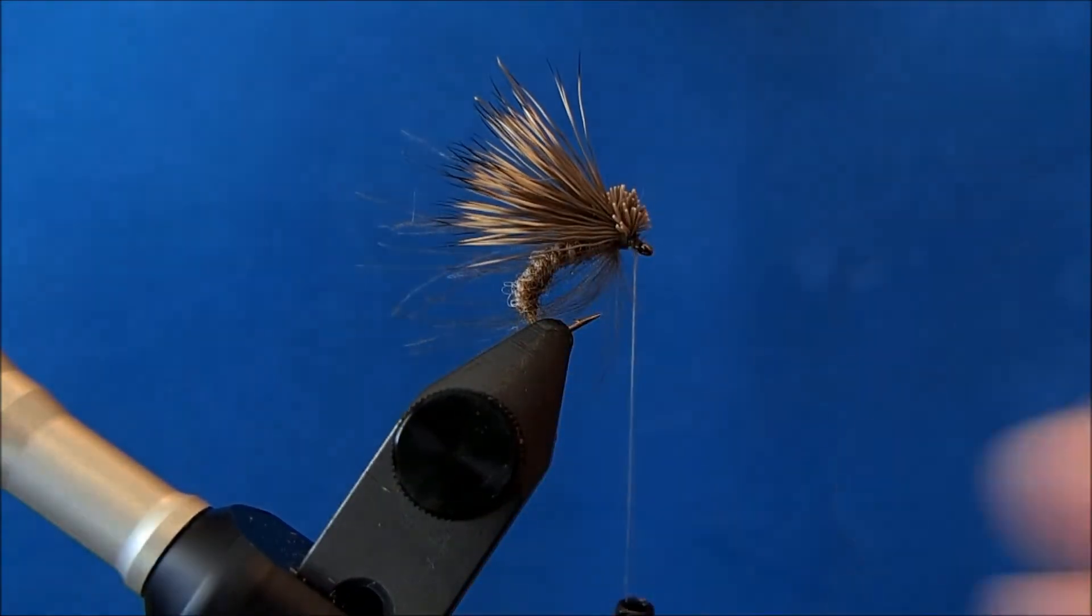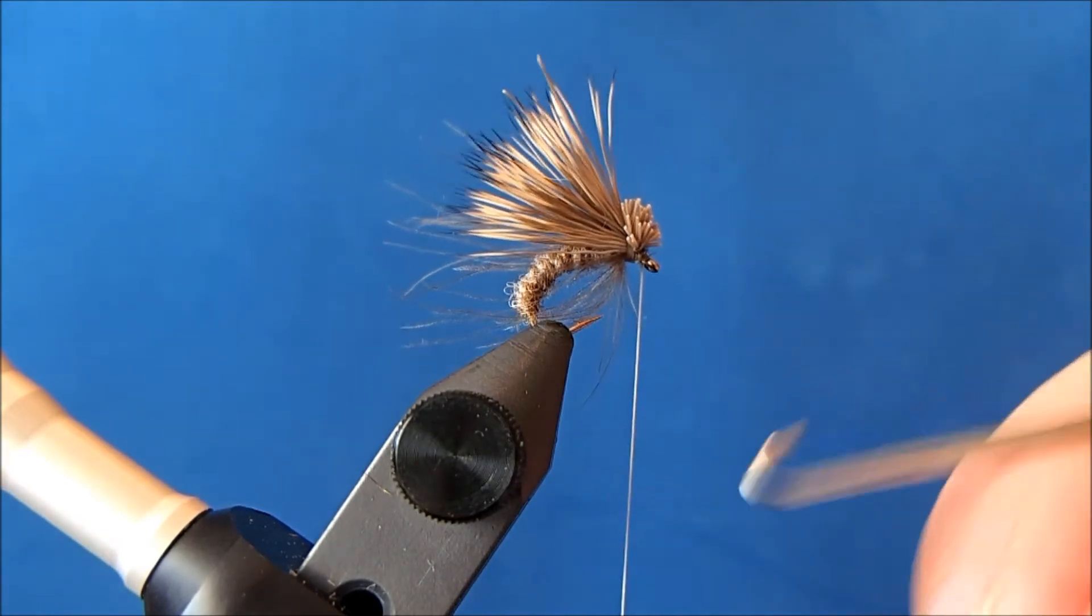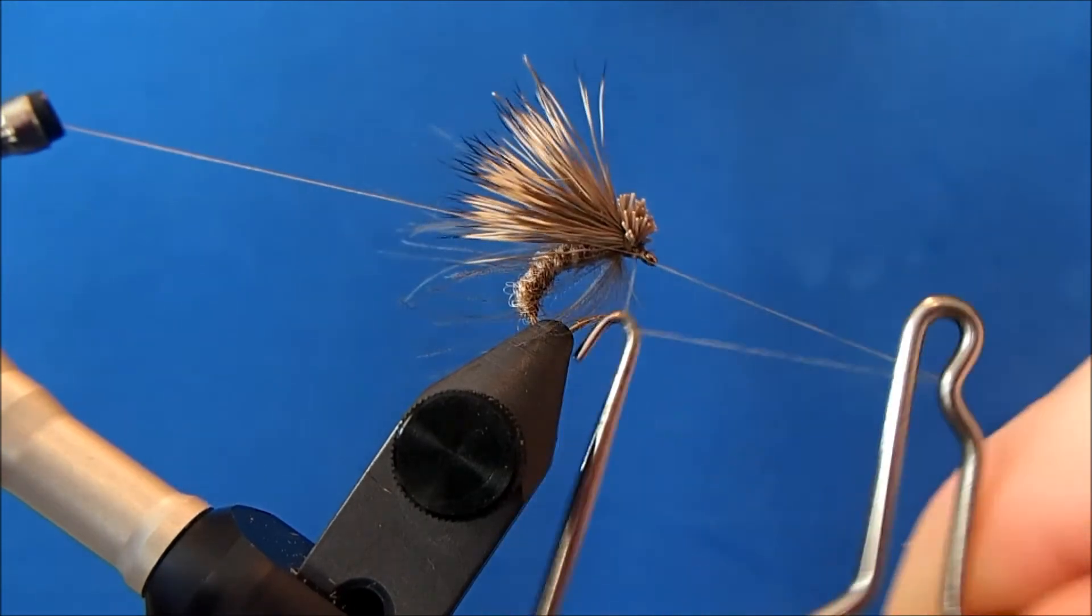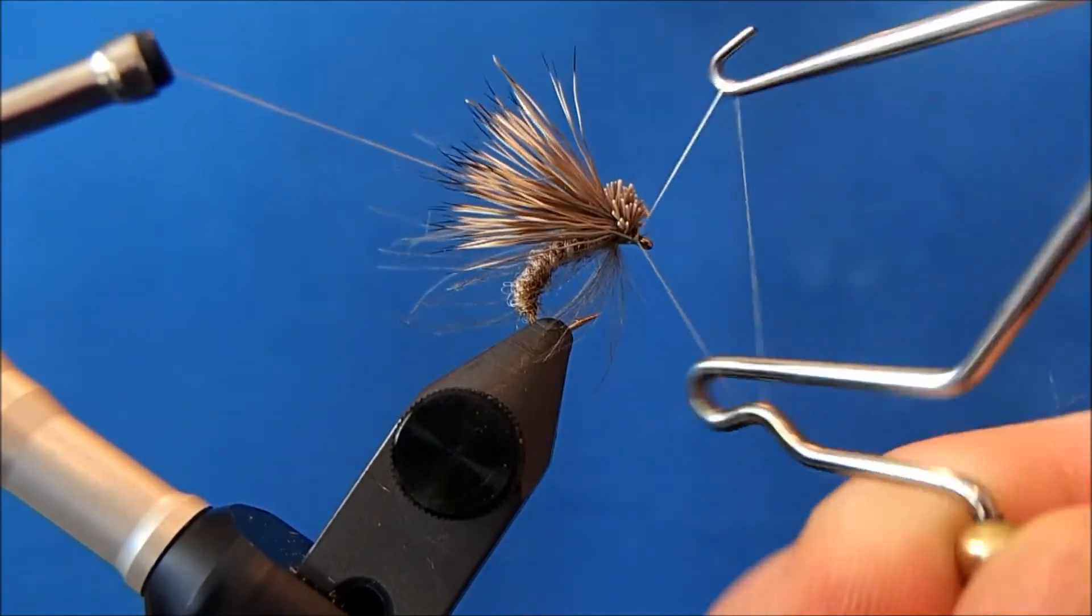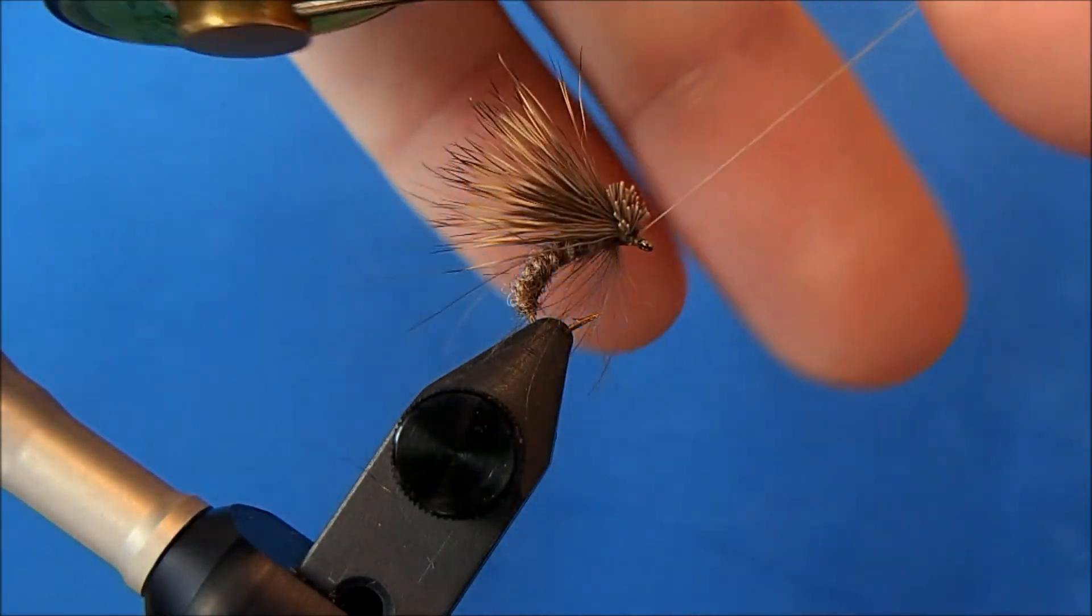You may have to adjust your hook slightly to get a good finish on this. You can also take your whip finishes through those butt ends. And then I'll pull it straight down and I can trim that.